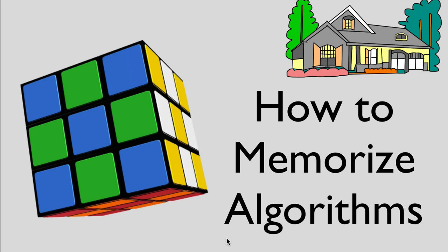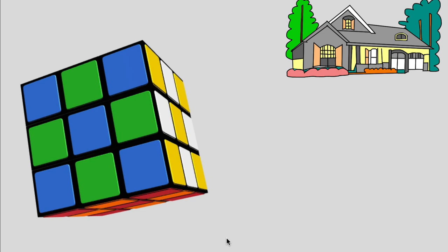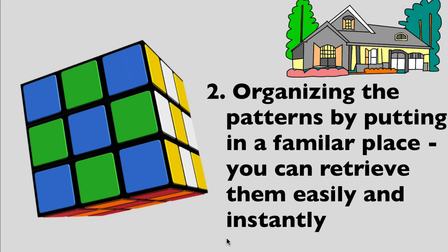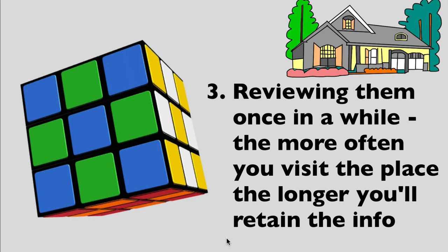First, you need to see the similar patterns and visualize them. This might take time at first but the more you do, the better you will be. Secondly, you need to organize them into a place that you are familiar with. Connecting is an important factor as well as focusing. And lastly, review them. Repetition is an important component for anything you want to master. The first step is identifying the patterns visually. The second step is organizing the patterns by putting them into a familiar place so you can retrieve them easily. The last step is reviewing them once in a while. The more often you visit the place, the longer you will retain the info — it will go into your long term memory and stay there.